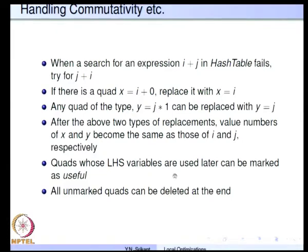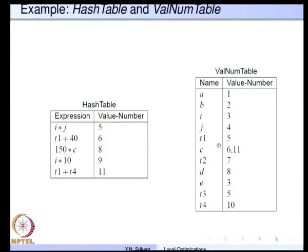Quadruples whose left-hand side variables are used later can be marked as useful. All other unmarked quadruples can be deleted at the end. I also mentioned that c gets a new value number 11 because it was assigned again; the old value of 6 is not used anymore. Such value numbers — the names are killed and then reused, so the value number 6 should never be used again.